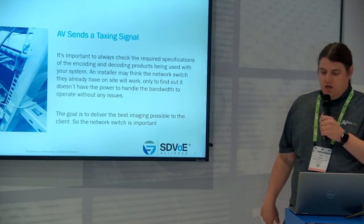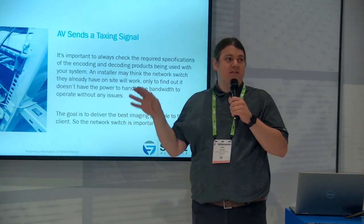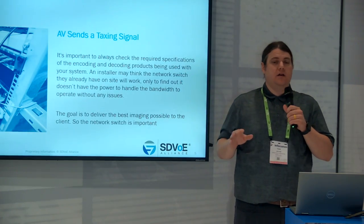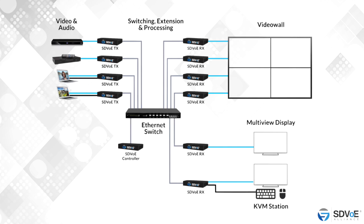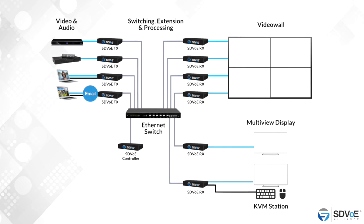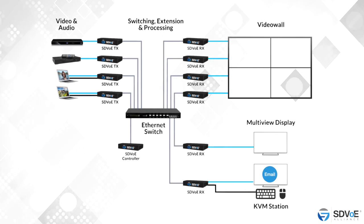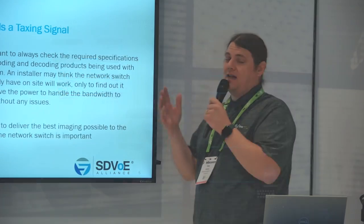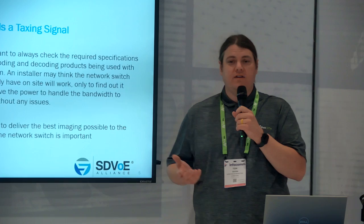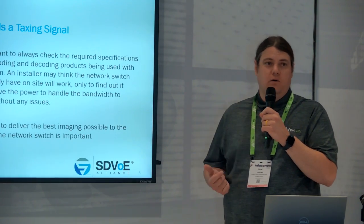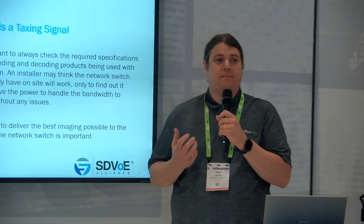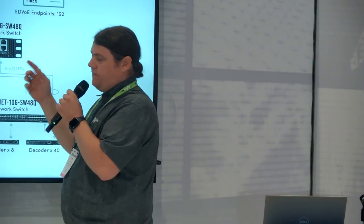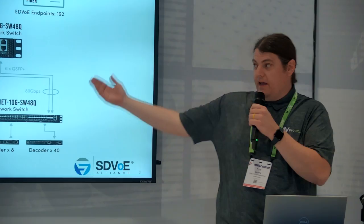It's all about meeting the specs, because AV sends a taxing signal. If you use ethernet normally for emails and internet, sending those packets is pretty easy — if a packet drops, it gets picked up later, no big deal. That's not the case with AV. With AV, we have a constant flow of data, and it is a very taxing signal with lots of information, so we need a big backplane.